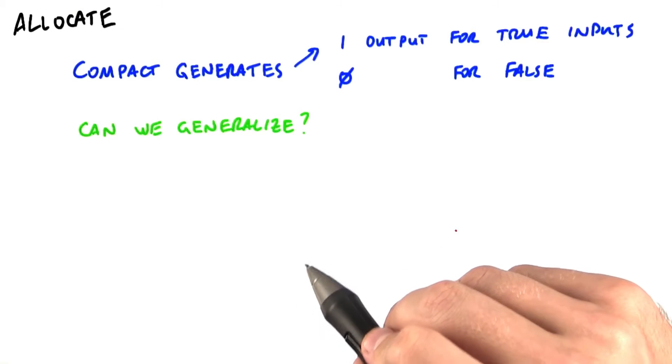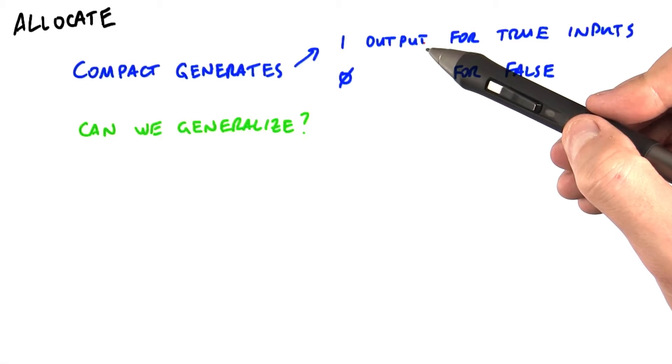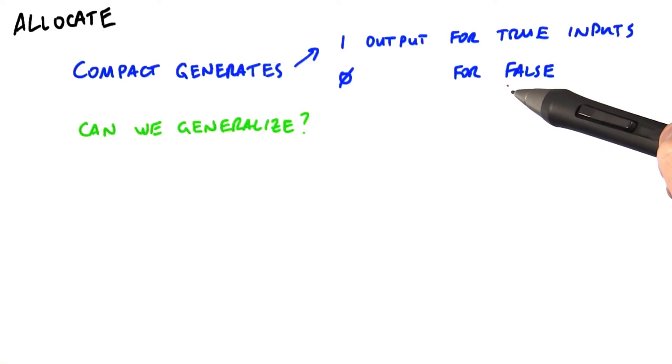We can generalize compaction in the following way. Compact is an operation that allocates exactly one item in the output for each true input and zero items in the output for each false input.